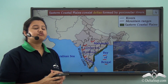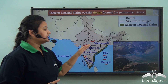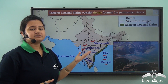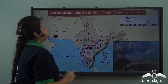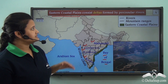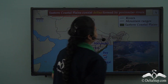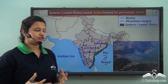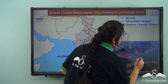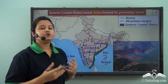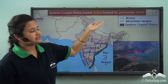These rivers form huge deltas at their mouths, and the deltas formed by these rivers are also part of the eastern coastal plains. The eastern coastal plain consists of these deltas, which are triangular or fan-shaped alluvial plains formed due to the huge deposition of silt and alluvium brought by these rivers.